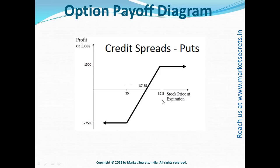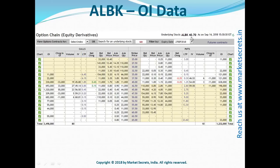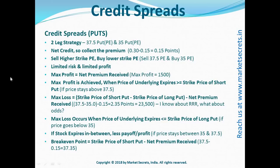Let's look at an example using Allahabad Bank. On the daily chart, Allahabad Bank has been moving between 35 and 50 for a long time — it has been range-bound for almost three months. The current price is 40.7. Looking at the OI data, using techniques from the options basics training, the OI resistance is at 45 and OI support is at 40. Since I am going to take a credit spread on puts, I need to select two strike prices below the current market price, so I am selecting 37.5 PE and 35 PE.